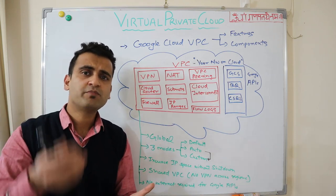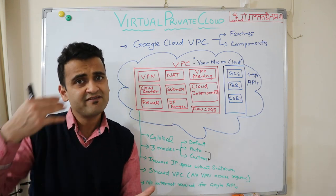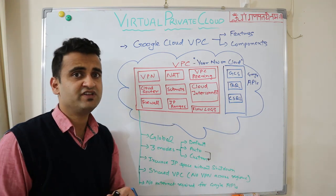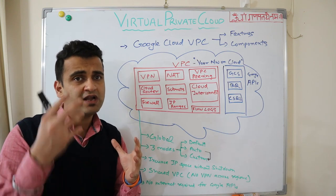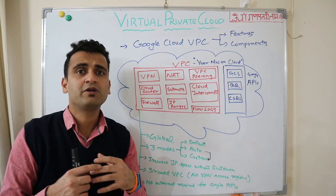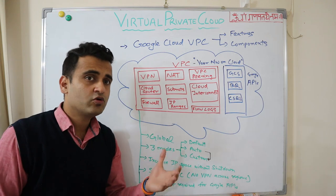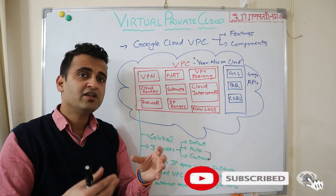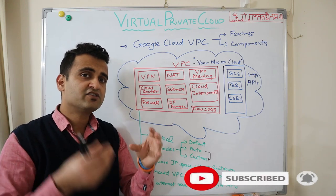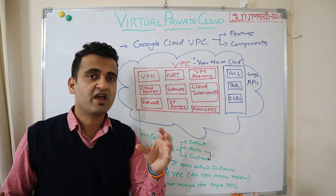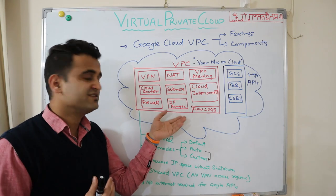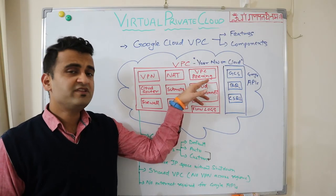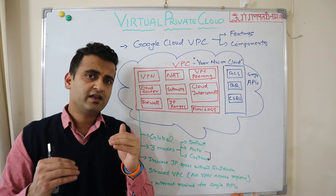IP ranges: by default you have a primary IP range, but you can also have a secondary IP range, which is an alias IP range. This is very useful when deploying containerized applications, where certain pods could run on your primary IP range, but in case of any failures, certain pods might run on your secondary IP range. This is optional but available.